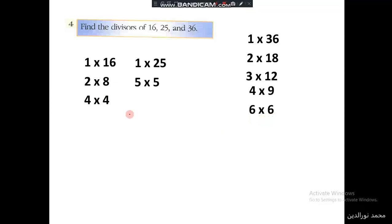Then we write them as a list. The divisors of 16 are 1, 2, 4, 8, and 16. And then the divisors of 25 are 1, 5, and 25.